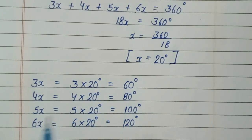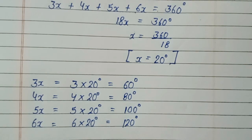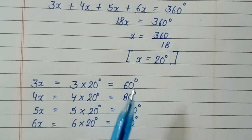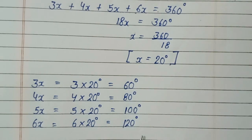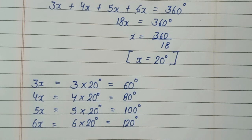To summarize: 3x means 3 into 20, 4x means 4 into 20, 5x means 5 into 20, and 6x equals 6 into 20. Then we get 60 degrees, 80 degrees, 100 degrees, and 120 degrees. These are the angles of the quadrilateral and this is our answer.